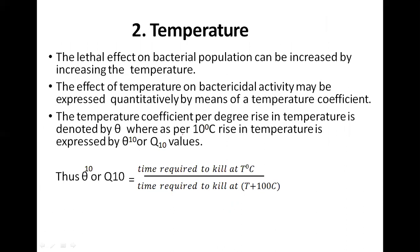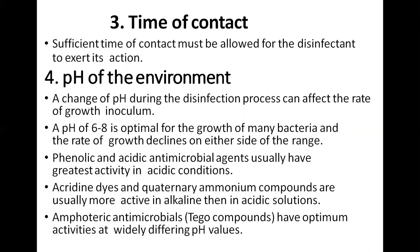When we increase temperature, the bacterial population starts to die and the disinfectant becomes very effective, but sometimes disinfectant activity also decreases. The temperature coefficient per degree rise is denoted by Q10. Q10 values tell us how much temperature affects the disinfectant — the time required to kill at T0 versus at T0 plus 10 degrees Celsius — and how temperature affects contact time.